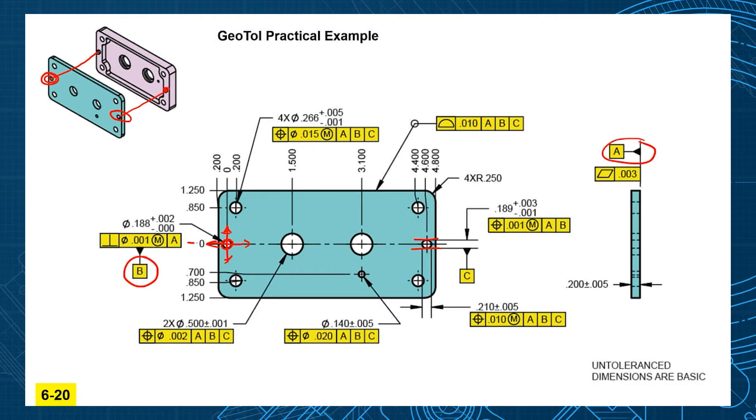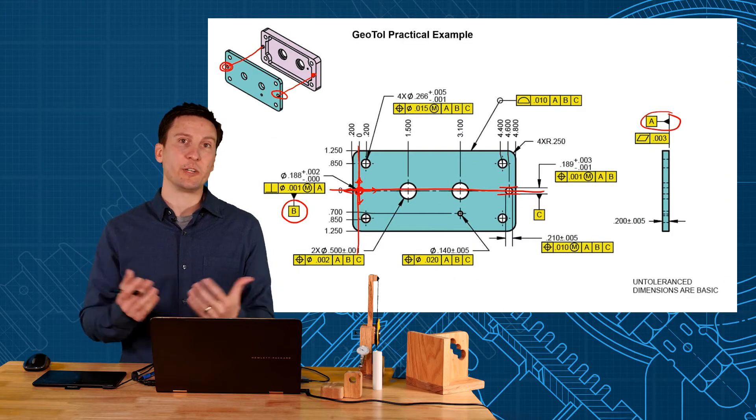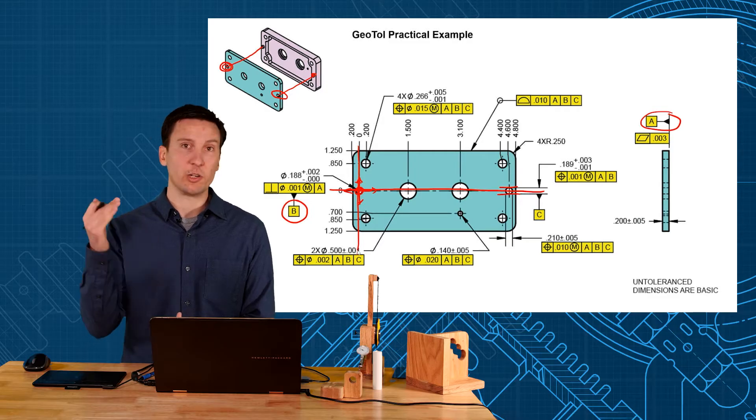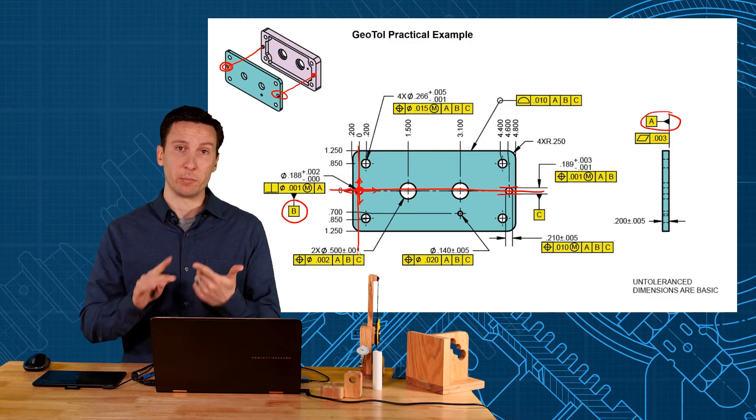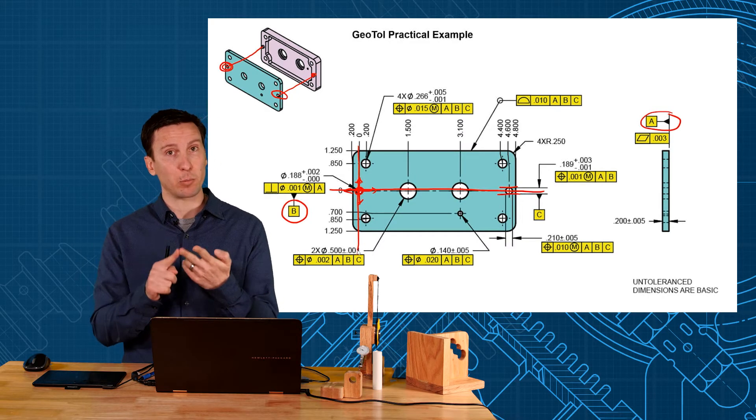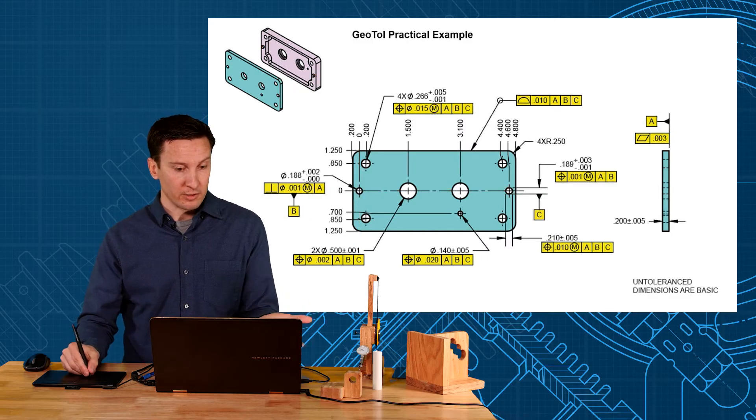So that will give you your datum reference frame, line up the hole and slot together, and there's the datum reference frame we need. And then we locate all of our features off of that. So we use position and profile to control the location. Position for features of size and profile for surfaces. And look, that's all we use here.